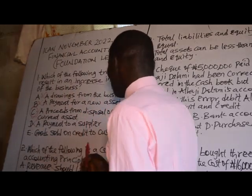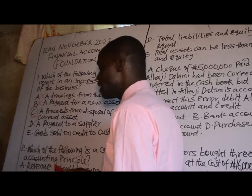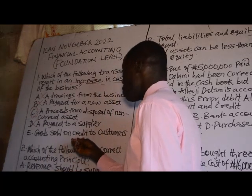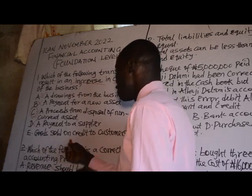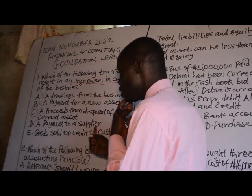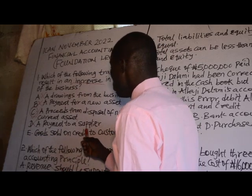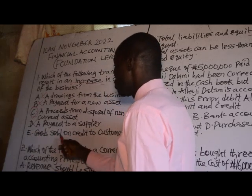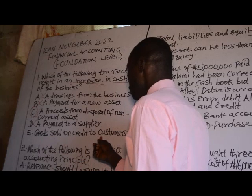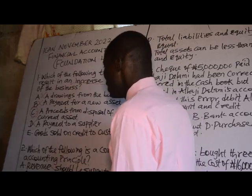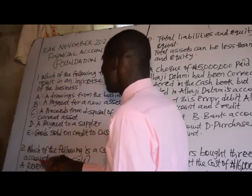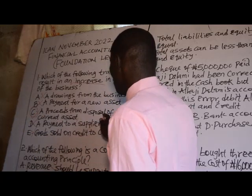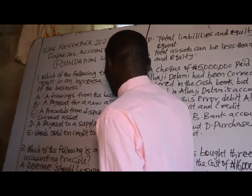Option E: goods sold on credit to a customer. Where goods are sold on credit, cash has not yet been received, so this will not affect the cash position of the entity until cash is actually received. Therefore the correct answer is option C.